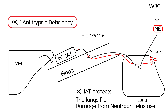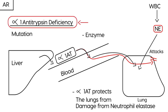Alpha-1 antitrypsin deficiency means you are deficient in this enzyme. This happens because of a mutation — this is an autosomal recessive genetic disorder — in the gene that codes for alpha-1 antitrypsin. As a result, people who have this are deficient in the enzyme.